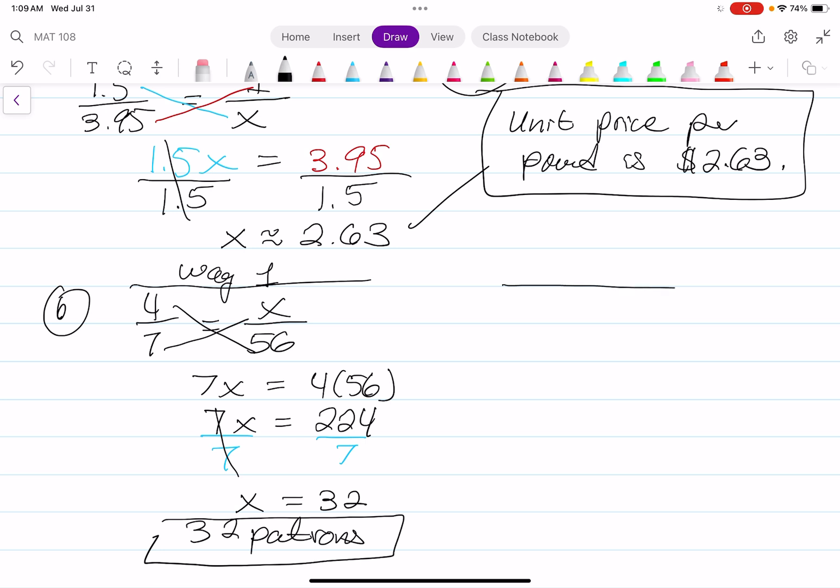I'm going to call this way number one. The second way is you can find four-sevenths of 56. Four-sevenths of a number means you multiply four-sevenths to the 56. Four-sevenths times 56 over 1, and that equals 224 over 7. When you divide that, that also gives you 32. Hence, the answer is 32 patrons. Two different ways to do the same question.